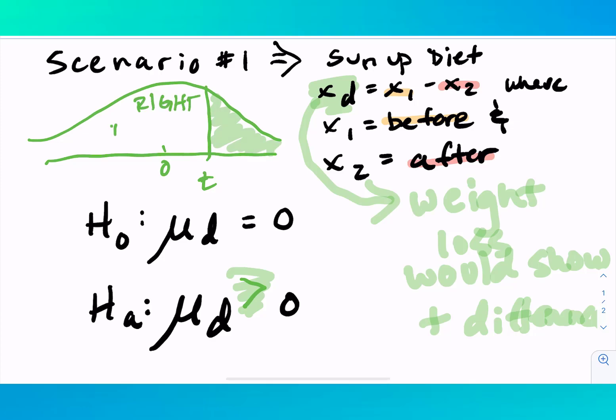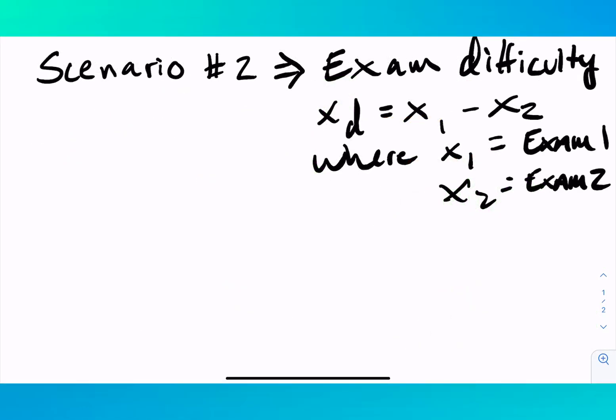So we're highlighting to the right. And again, we call this a right tail test. So that is very specifically because in this scenario, we would want to see if the diet was effective, which means based on the subtraction direction, it would be positive.